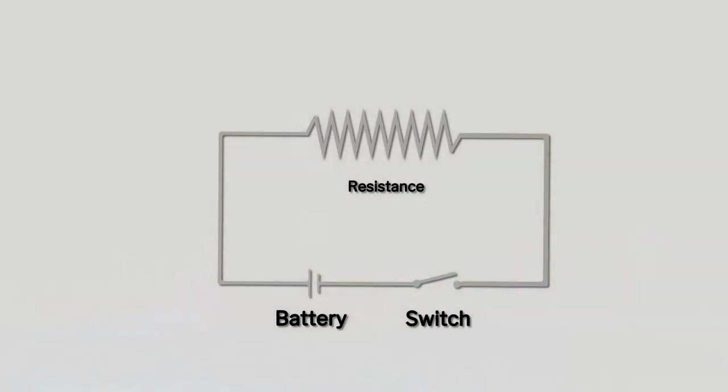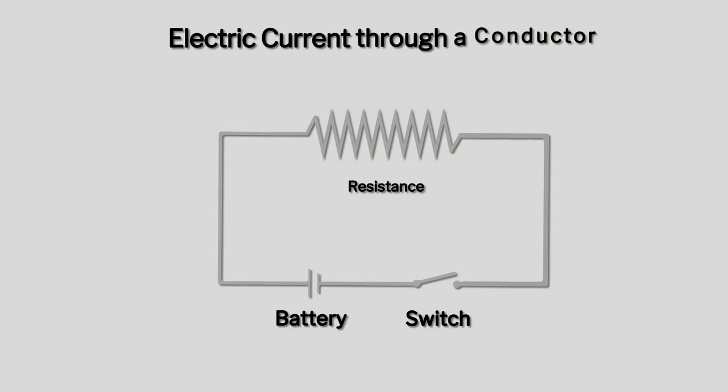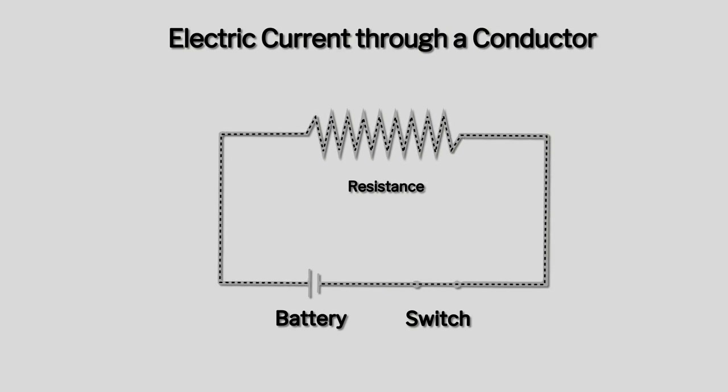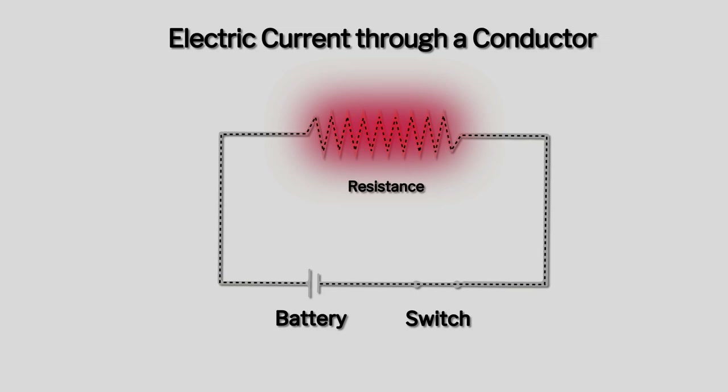Hello everyone. In this video we'll be learning about effects of electricity. We'll start with the heating effect of electric current. When an electric current is passed through a conductor, the conductor becomes hot after some time and produces heat.